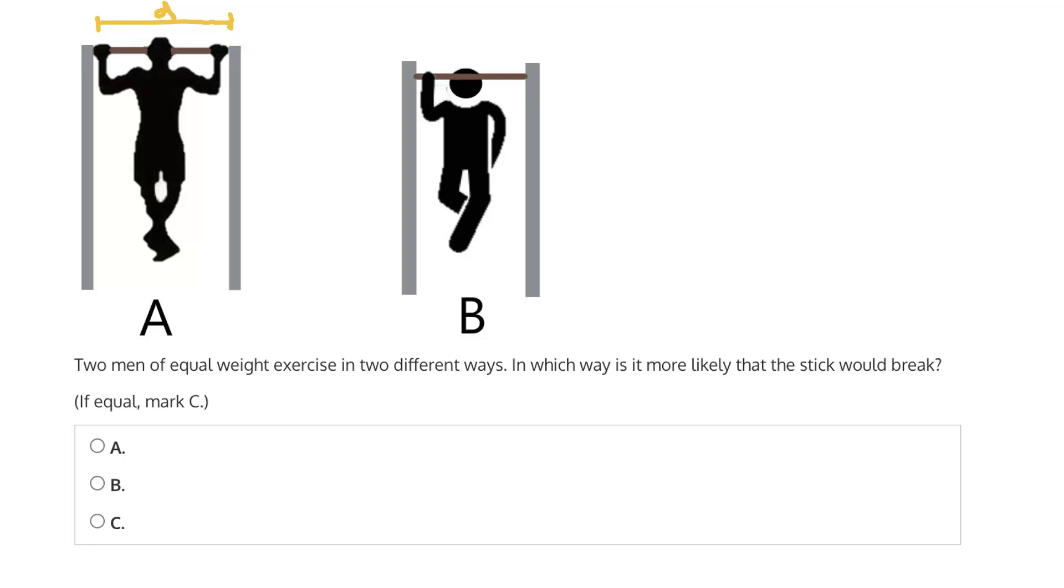Now, the way these supports are going to support the weight of the men is by reaction forces. They will experience reaction forces that oppose the downward weight of the men. So in A's case, the man using two hands, because he's using two hands, his weight will be distributed in the center between these two support beams.